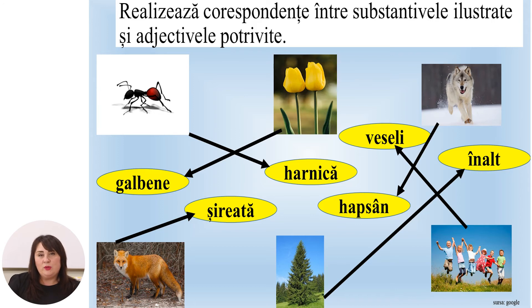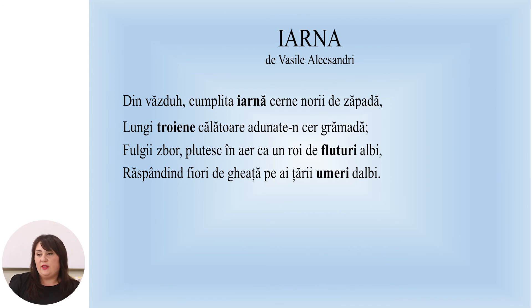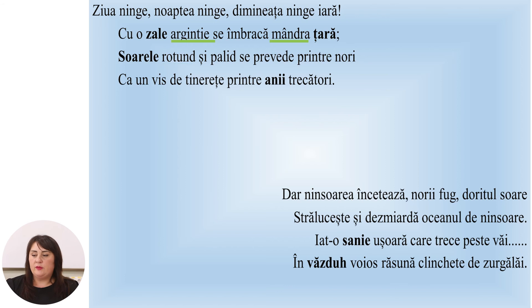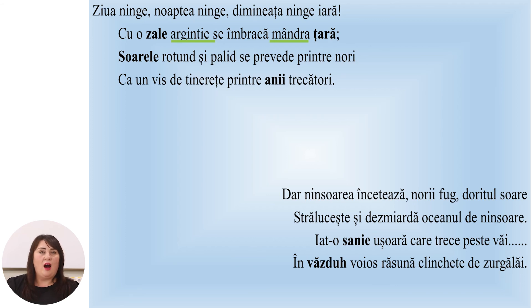Lecția trecută am studiat poezia Iarna de Vasile Alexandri. Să identificăm în textul dat adjectivele pentru substantivele evidențiate. Iarnă — cumplită. Troiene — călătoare. Fluturi — albi. Umeri — dalbi. Zale — argintii. Țară — mândră. Soare — rotund și palid. Ani — trecători. Sanie — ușoară. Văzduh — voios.